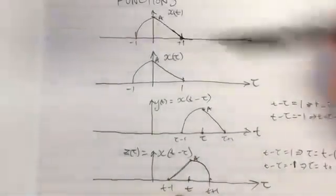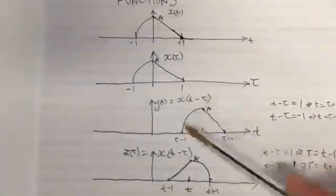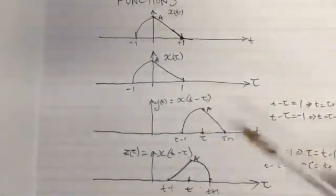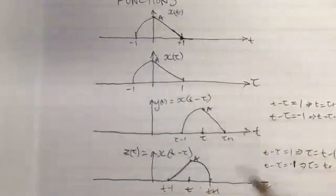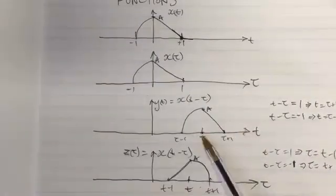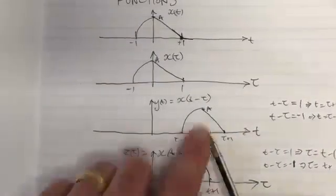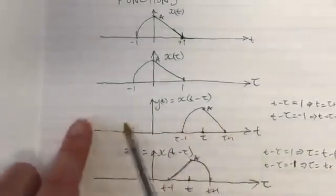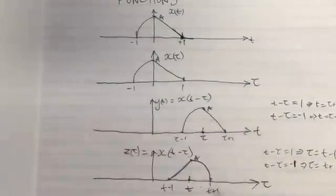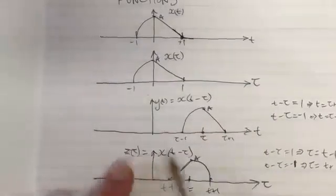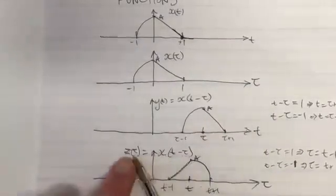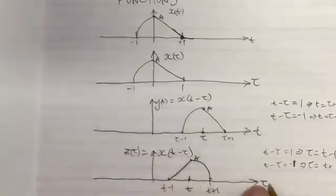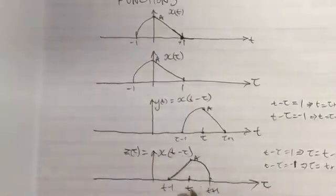So if we're plotting this shifted version of x with respect to t it looks like this, shifted by τ. But if we plot the same function with respect to τ for a particular value of t, the function looks like a reflected and shifted version — the range runs from t minus one to t plus one.